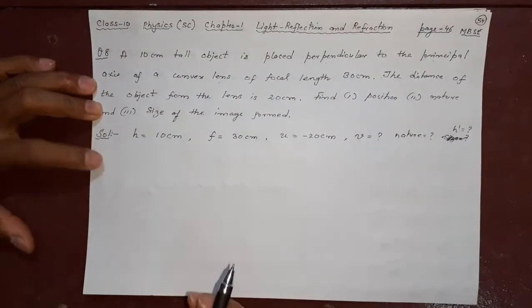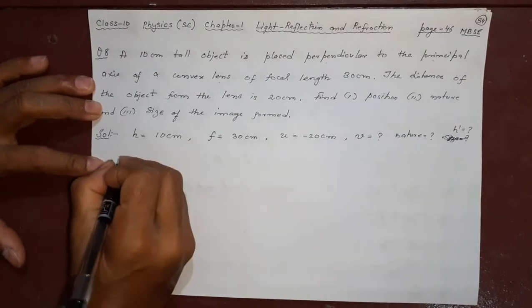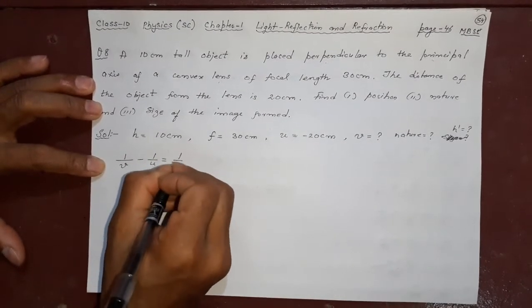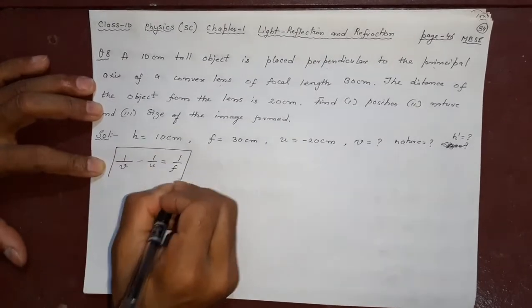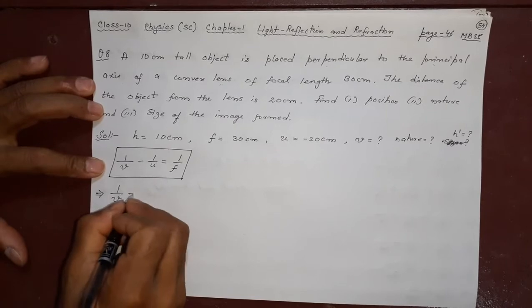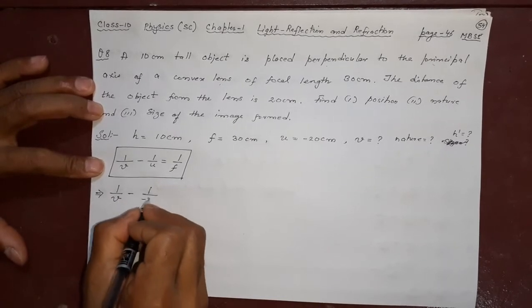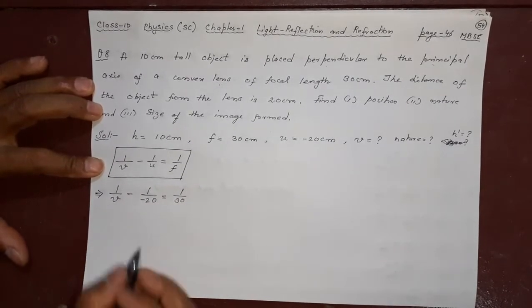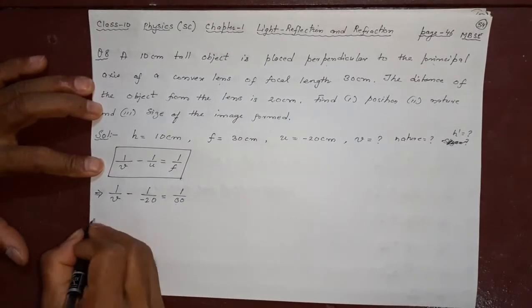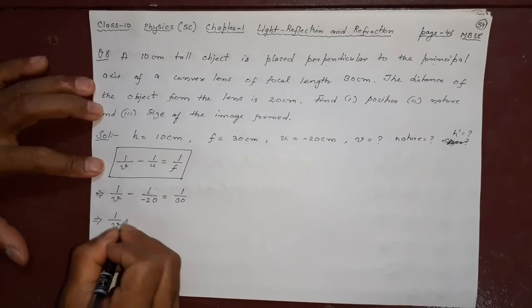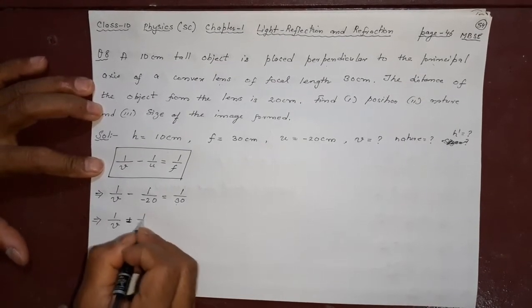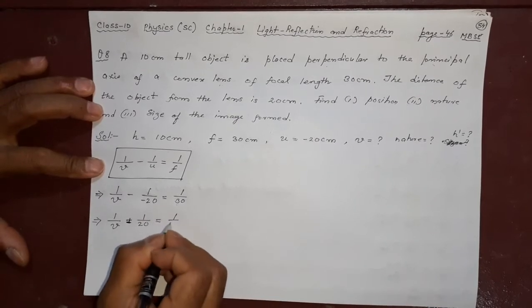First of all, it is lens, so you will use lens formula: 1 by v minus 1 by u equal to 1 by f, very simple. What is 1 by v, we do not know. What is 1 by u, minus 20. What is 1 by f, 1 by 30. I kept in place of u minus 20, in place of f, 30. What is this, 1 by v equal to, this is minus into minus plus 1 by 20 equal to 1 by 30.